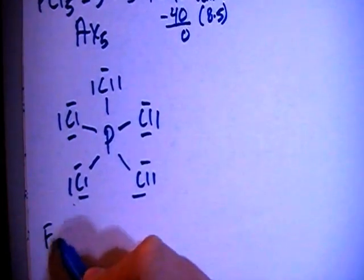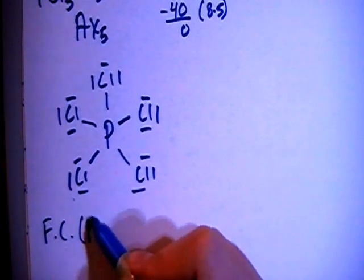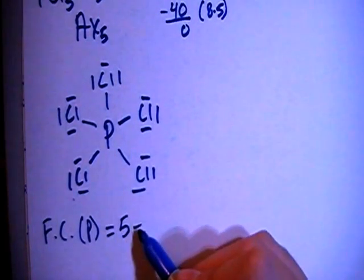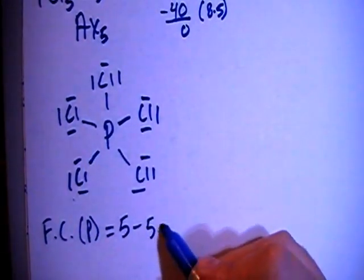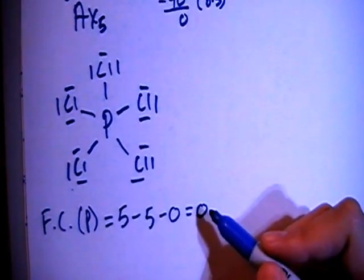Let's check the formal charges on these atoms to make sure that this is the correct structure. For phosphorus, it's 5 valence electrons brought in minus 5 bonds minus 0 non-bonding electrons for a formal charge of 0.